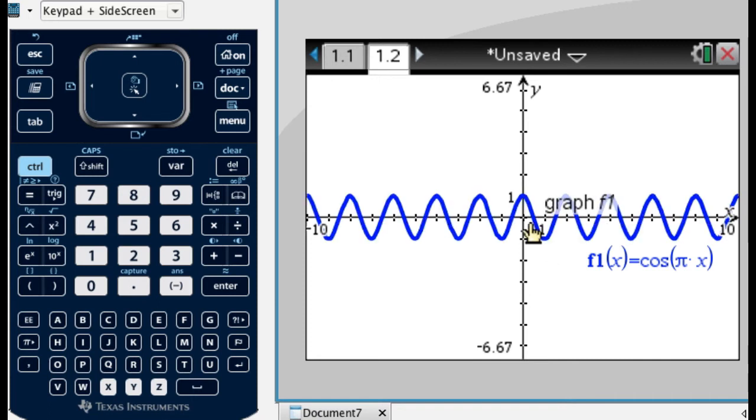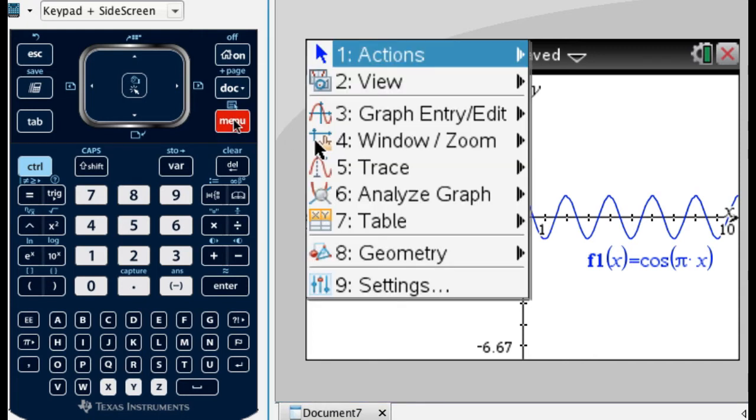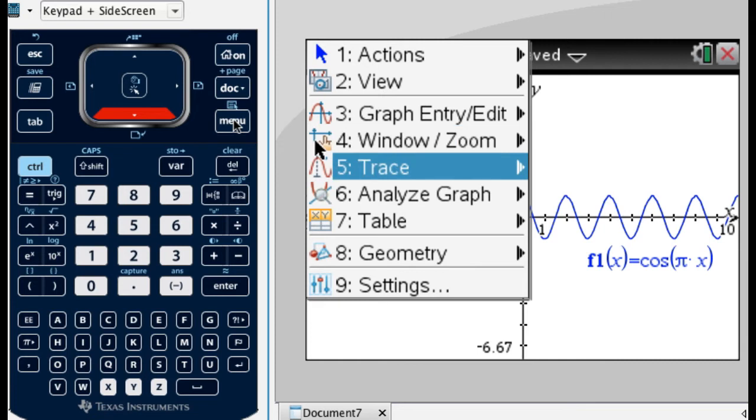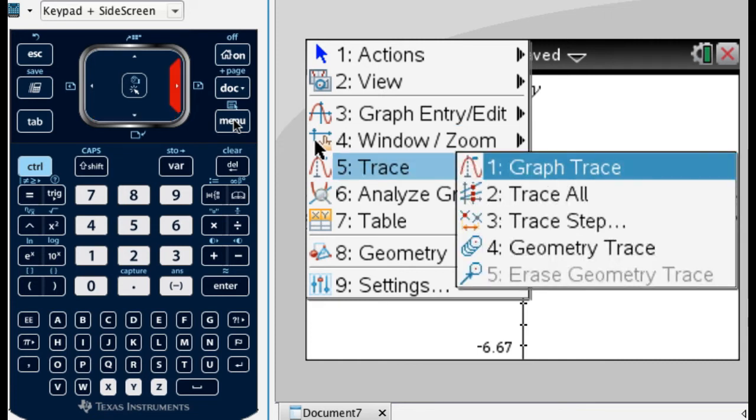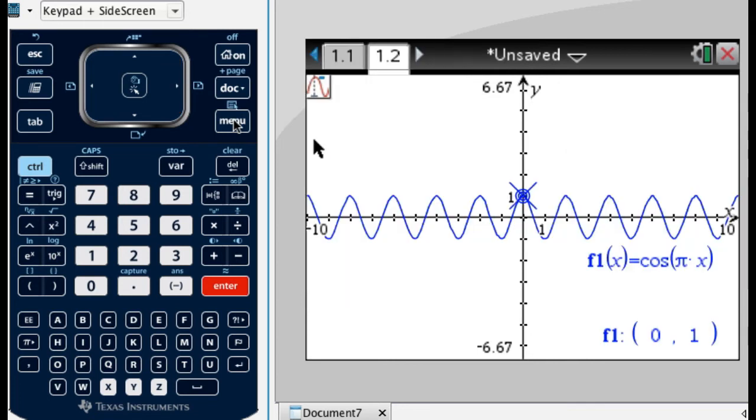And I mean, there's not much to be done. But what we're supposed to look at is the x-coordinates of where things happen. So what I will do is menu. Menu, in general, is a good thing to press. And then I'm going to go down to trace, and then graph trace. So menu 5, 1, which eventually you want to memorize. Menu 5, 1 takes you to graph trace.